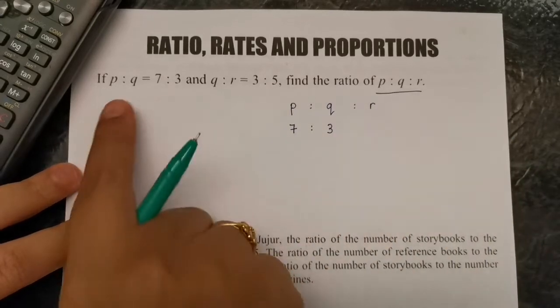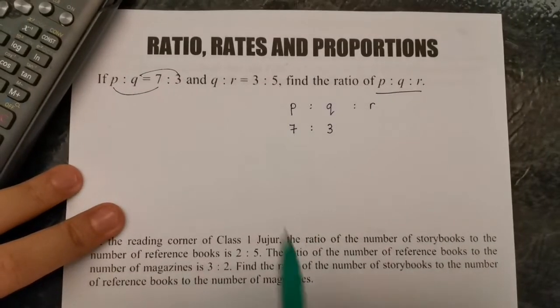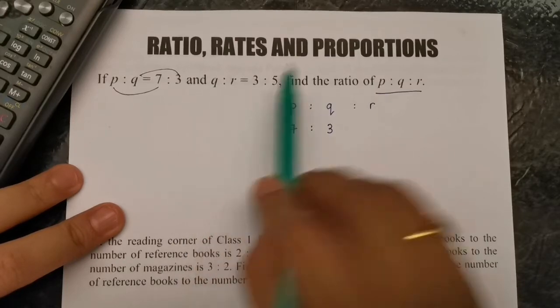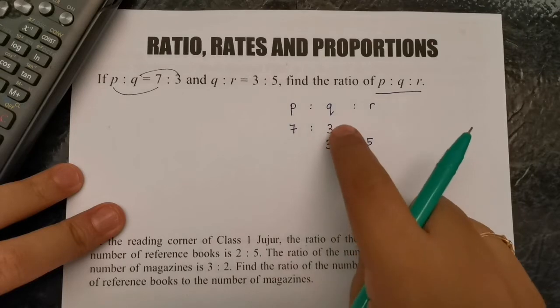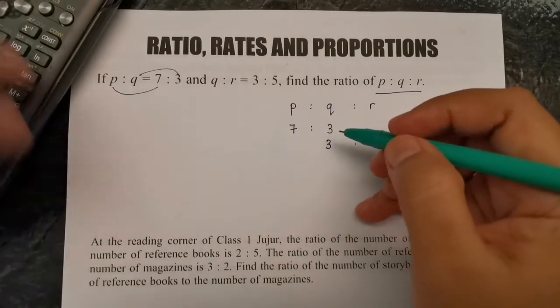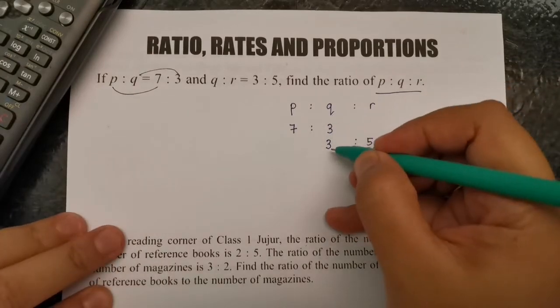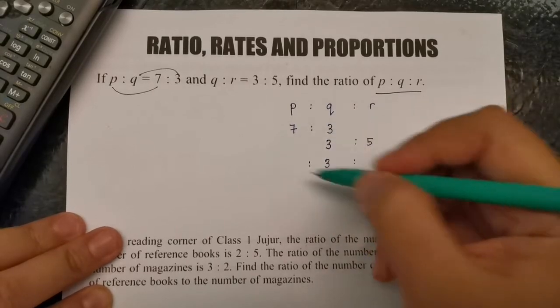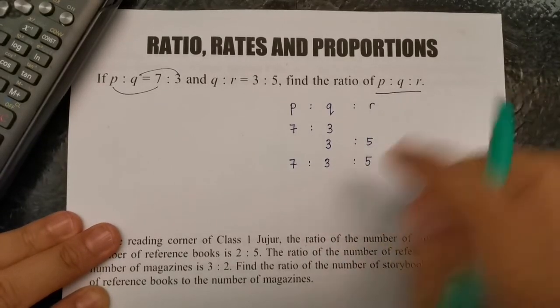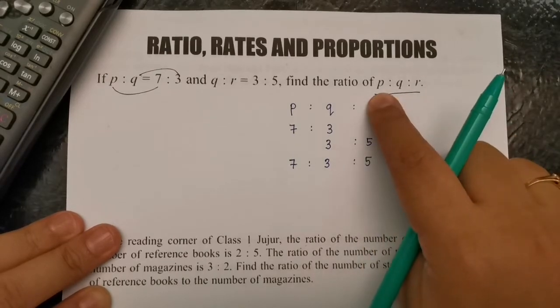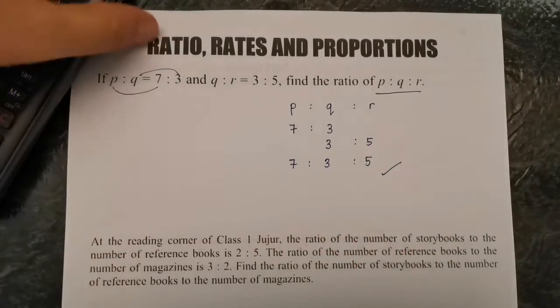This is the first information, p here, q here. The one in front represents the one at the back. Then q is 3, r is 5, so put it in the second line: q is 3, r is 5. We look for a value that appears twice. When both values are the same, it's easy - this 3 is already matching, so we just combine: 7:3:5. This is the final answer.